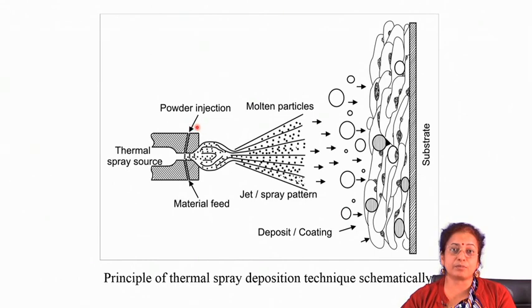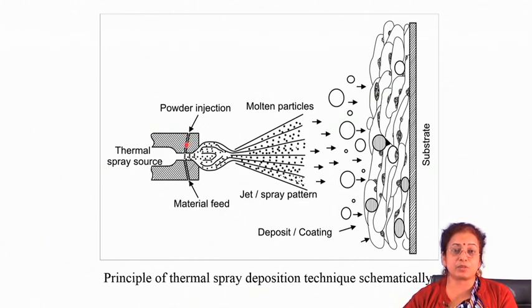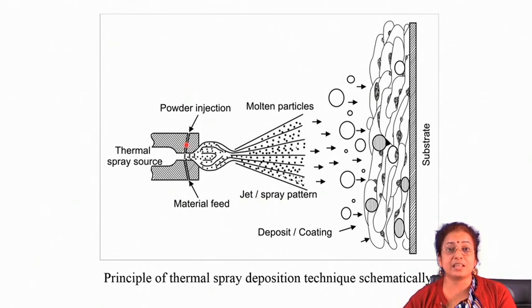If the powder particle size is submicron, there will be problems of agglomeration and flying of particles. Most heat-based processes use micro-sized particles of around 45 to 60 microns. If you want to use nano-sized particles, you must agglomerate and spray-dry them to achieve that particle size range. Note that nano-sized does not mean the powder particle itself is nano — it means the grain size or crystallite size is nano in dimension, while the actual particle size should be 45 to 60 microns and flowable.